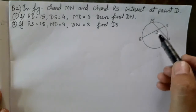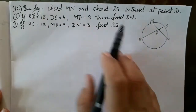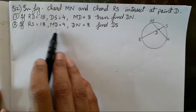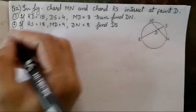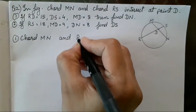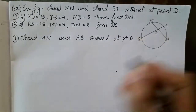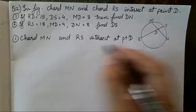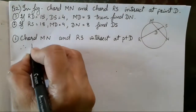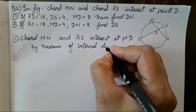In the figure, chords MN and RS intersect at point D. There are two sub-questions. First we need to find DN, and second we need to find DS with different given measurements. Chord MN and RS intersect inside the circle. Therefore, by the theorem of internal division of chords, we will apply the formula.